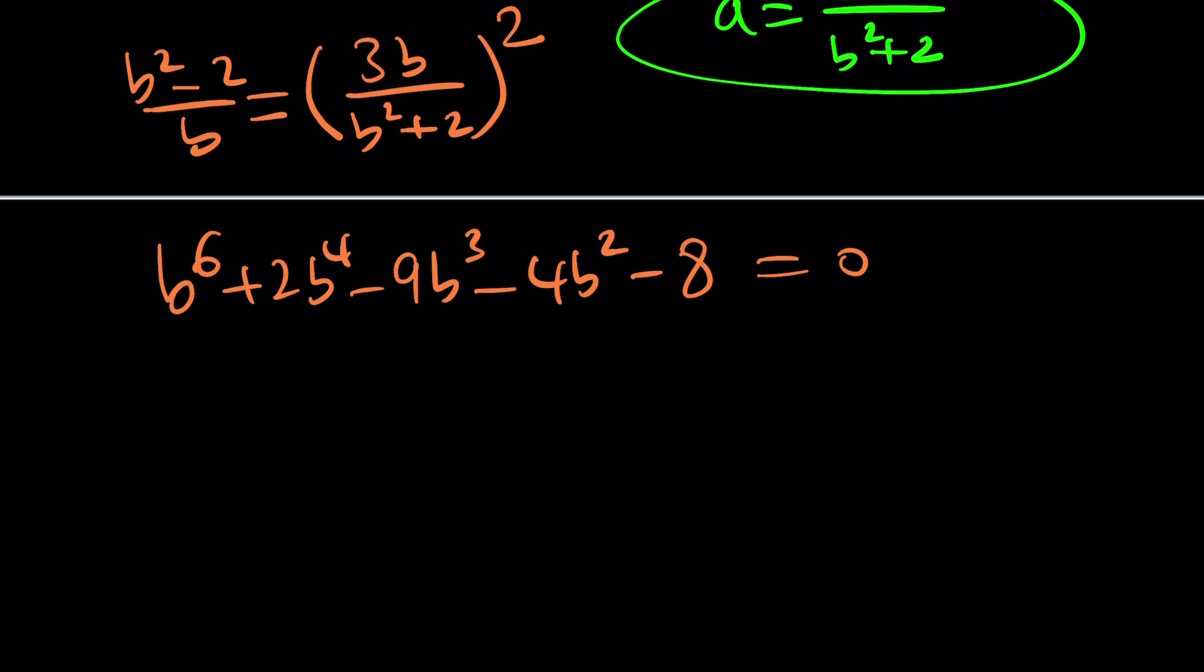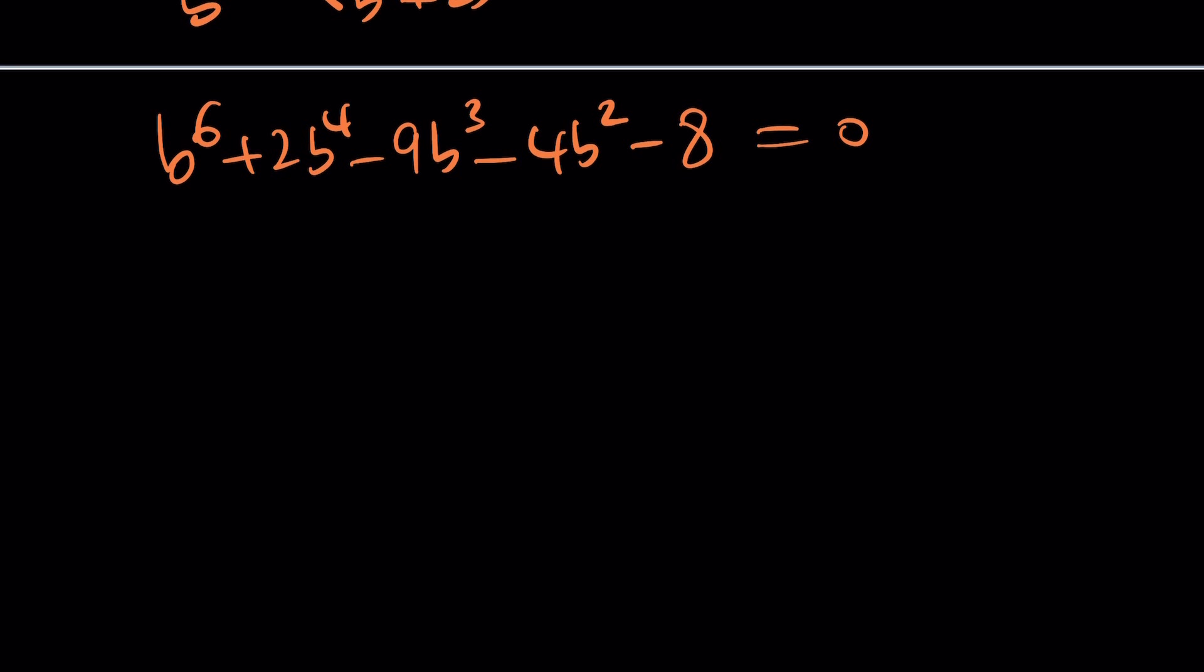Those are, one, check the sum of the coefficients. If the sum of the coefficients is zero, then one is a solution. Like, b equals one in this case. If the sum of the even coefficients are equal to the sum of the odds, which I'll make clear in a little bit, then negative one is a solution. What does that mean? First, check the sum of the coefficients. One plus two minus nine minus four minus eight. This is a three, negative six, negative ten, negative 18. That doesn't look good.